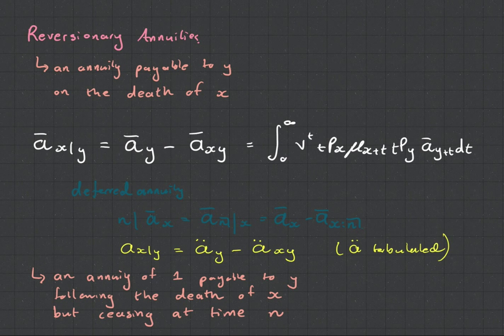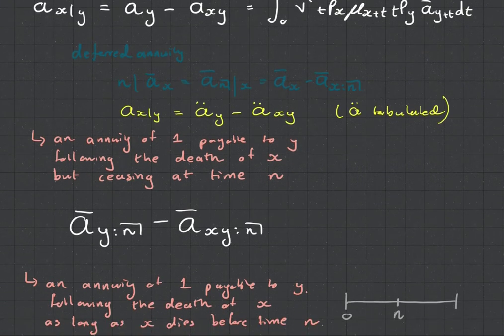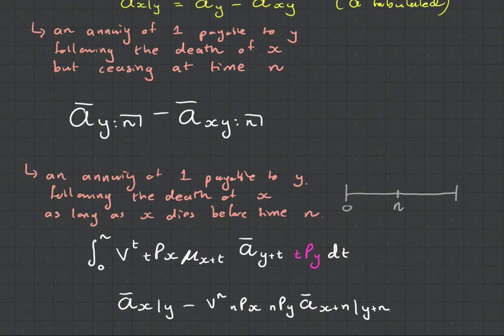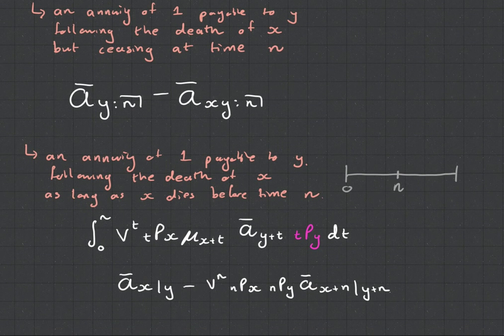Now, they do get a little bit more complicated. You could introduce a term, so this says the wife will only receive her payment for another 10 years. But there's also ones where you can get the annuity is guaranteed in the beginning or it's guaranteed at the end.